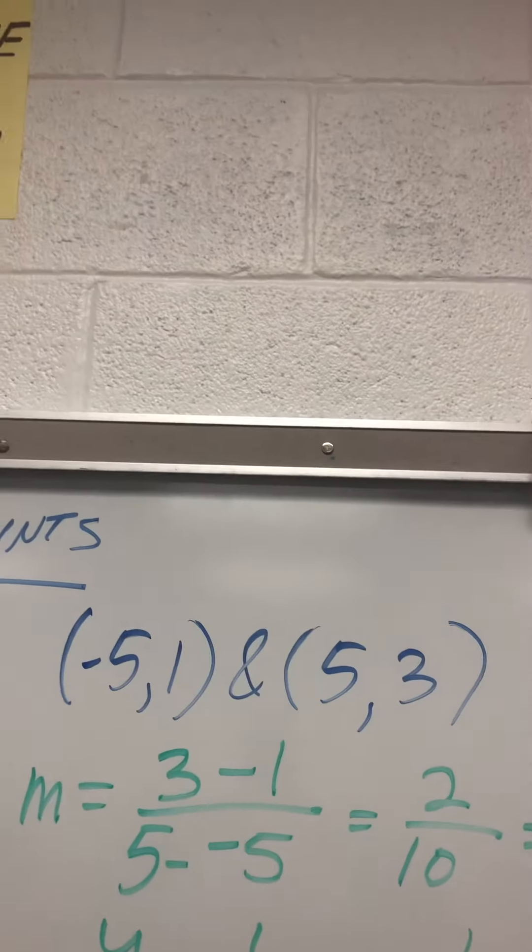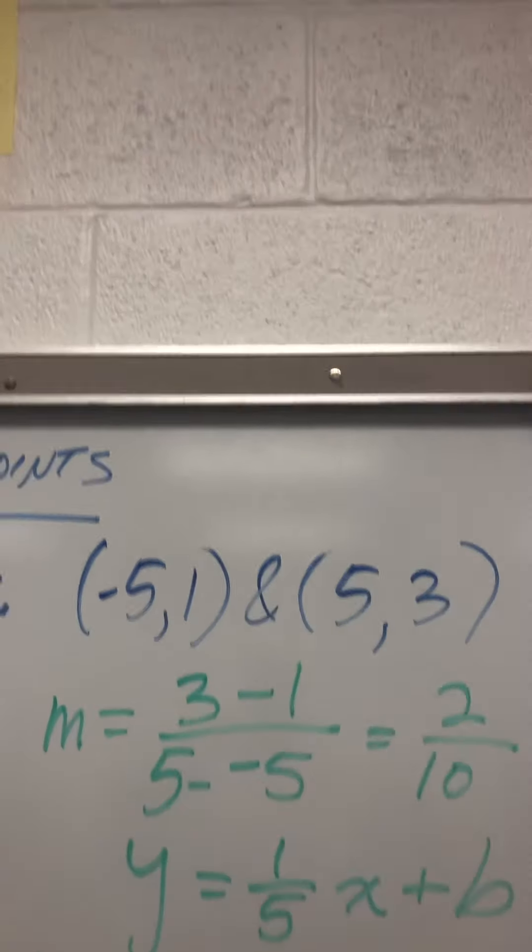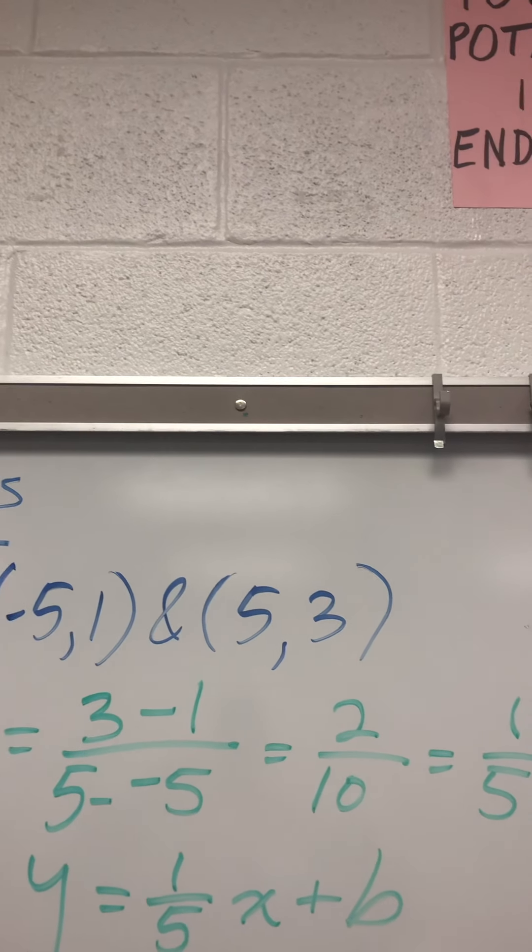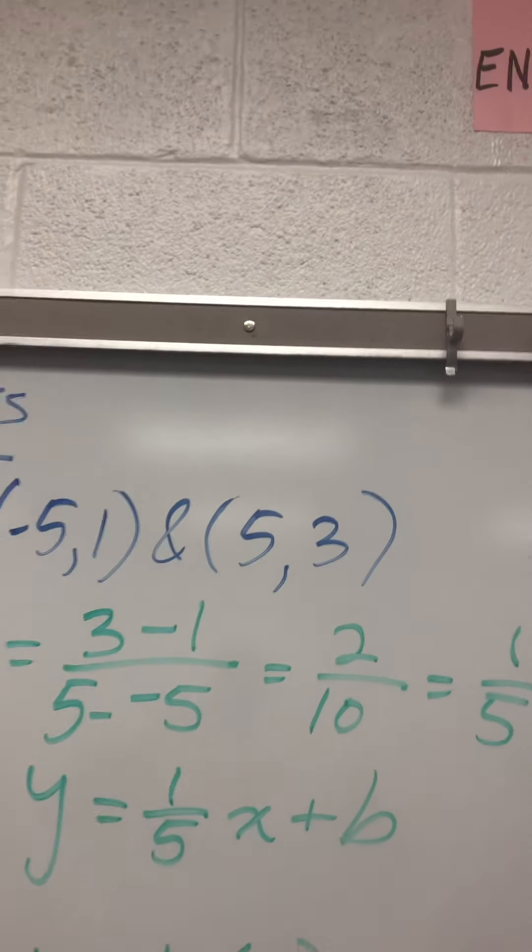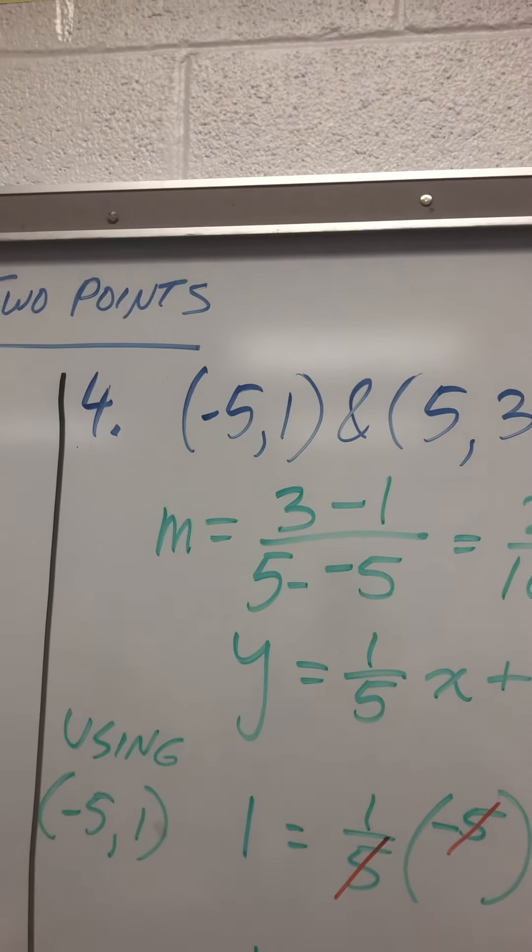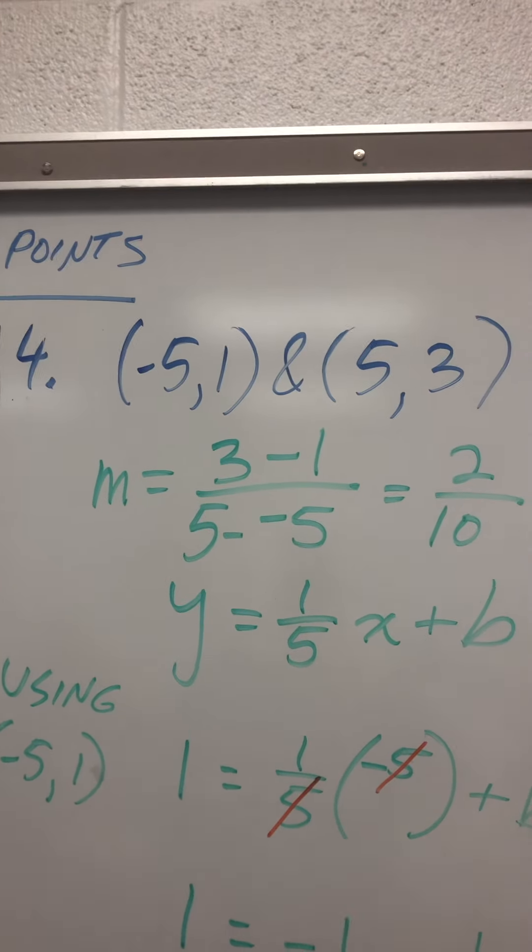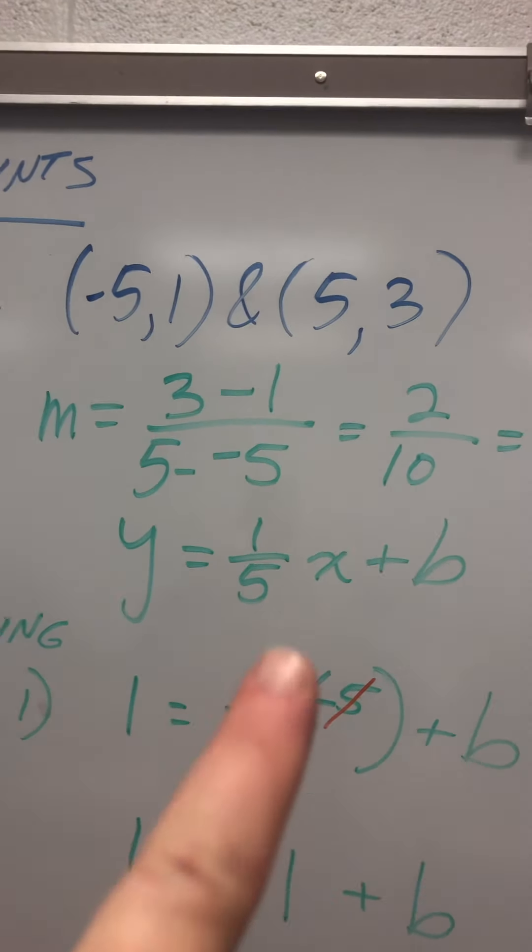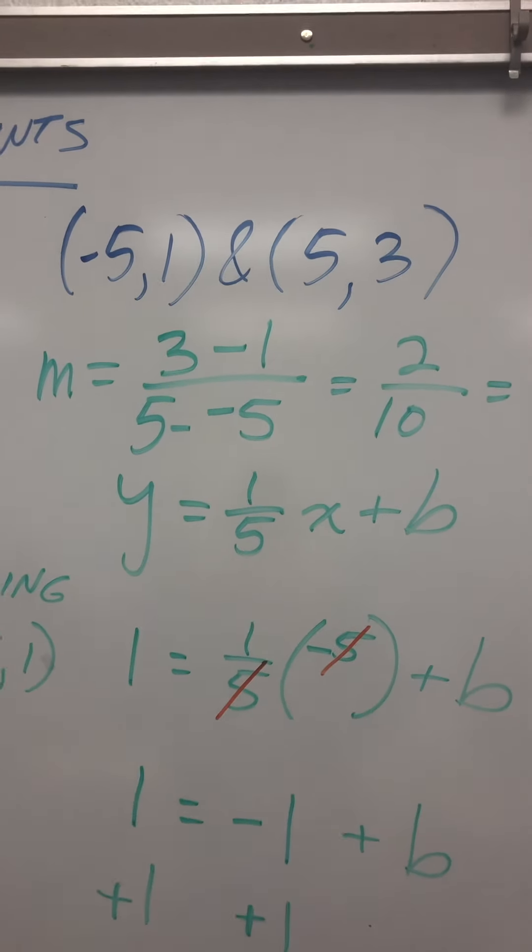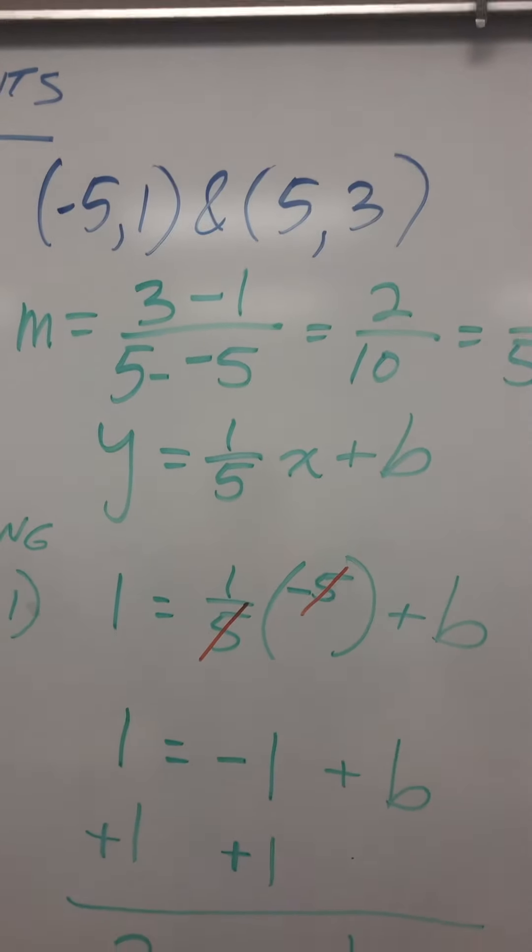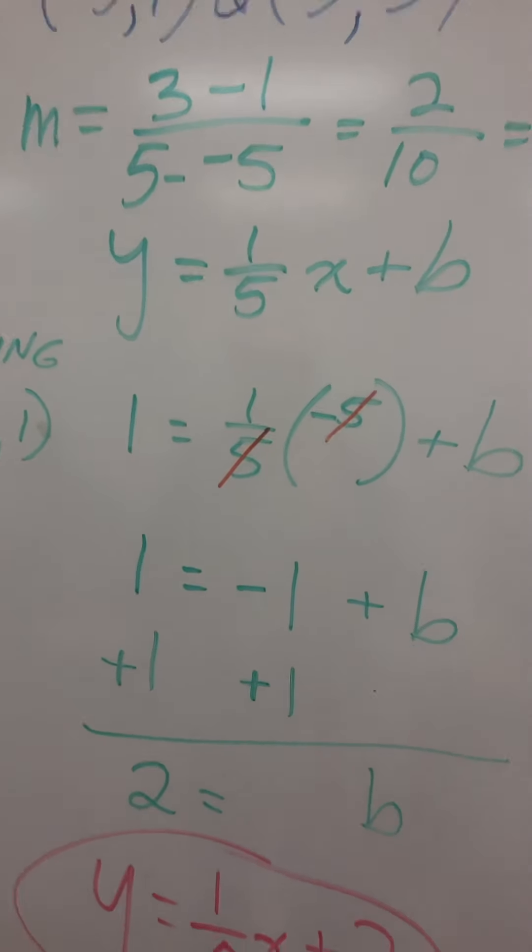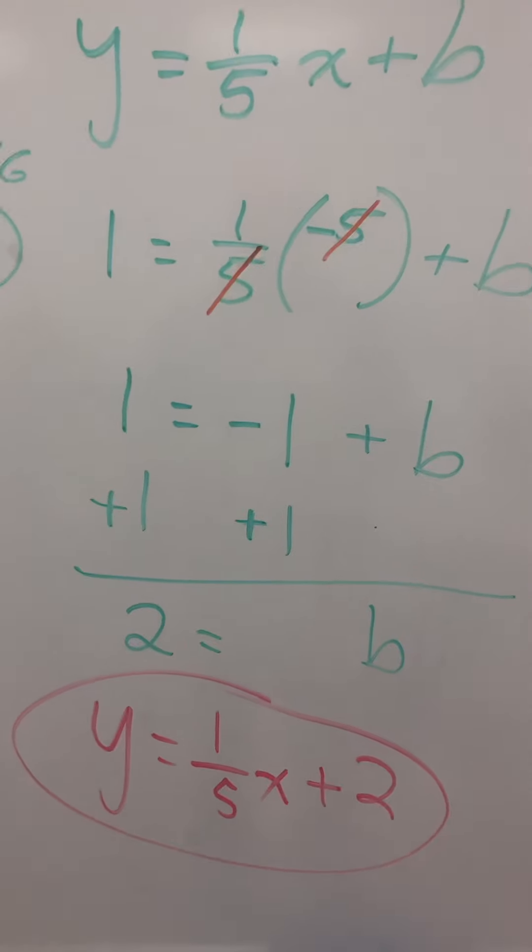Here I'm going to do 3 minus 1 over 5 minus negative 5 gives me 2 tenths. I reduce to 1 fifth. Y equals 1 fifth x plus b using negative 5, 1, the 5's cancel. Don't lose that negative right there. You get 1 equals negative 1 plus b. Add 1 to both sides. B equals 2. Y equals 1 fifth x plus 2.